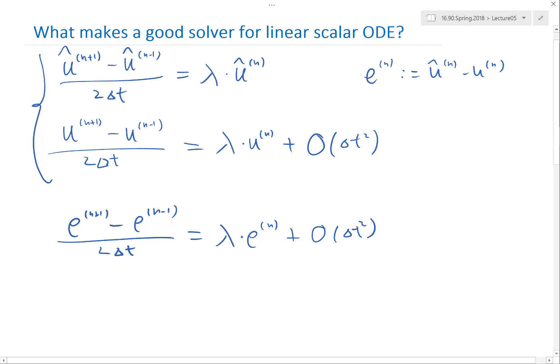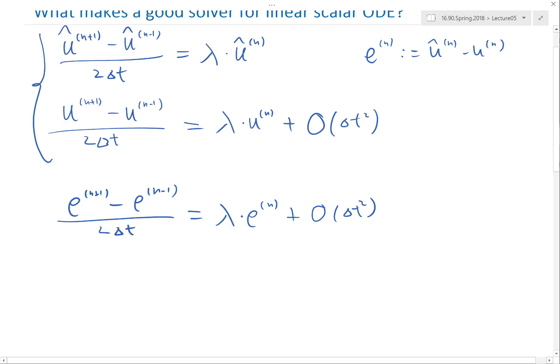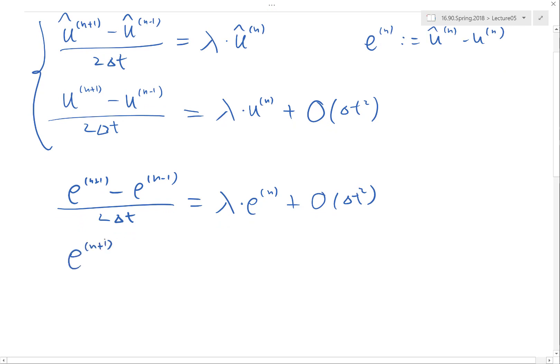Actually, for any schemes, you can do the same thing. Now, we move the latest iterations to the left-hand side. What we get is e to the n minus 1 plus 2 delta t lambda times e to the n plus O delta t to the cube. Right?